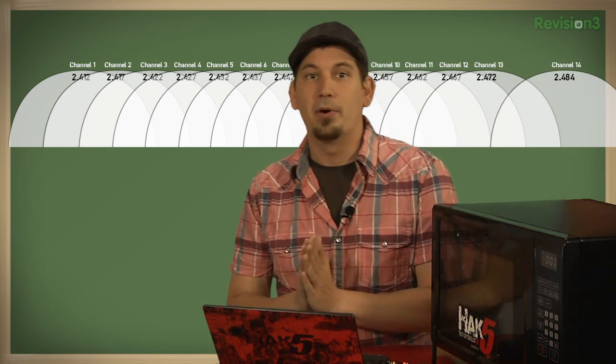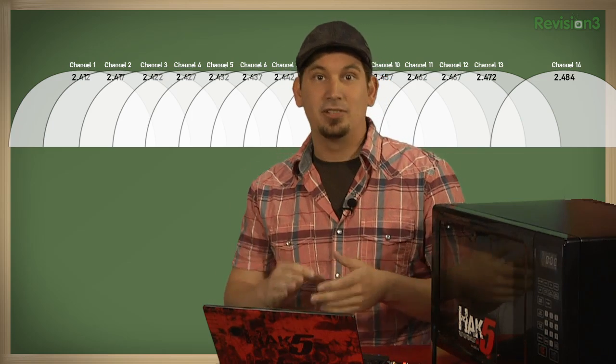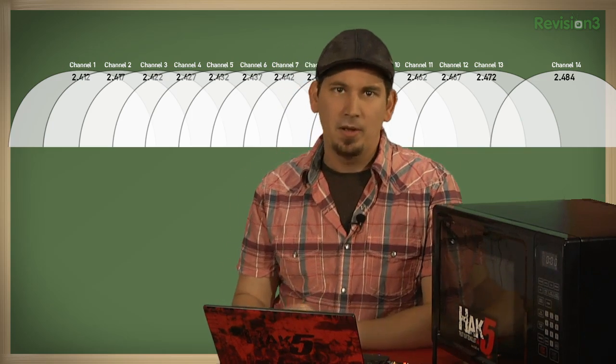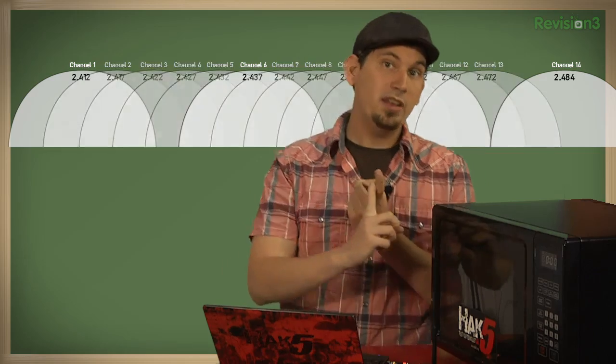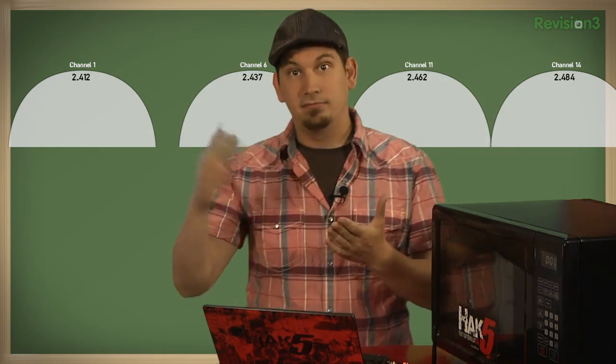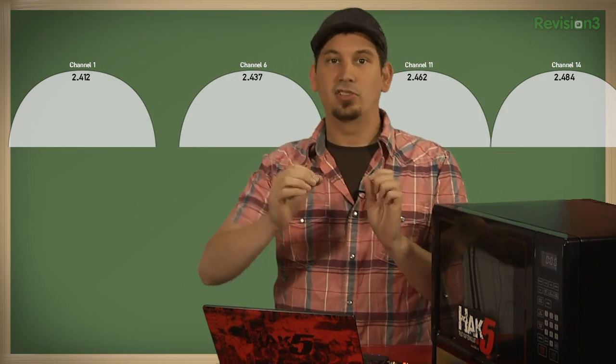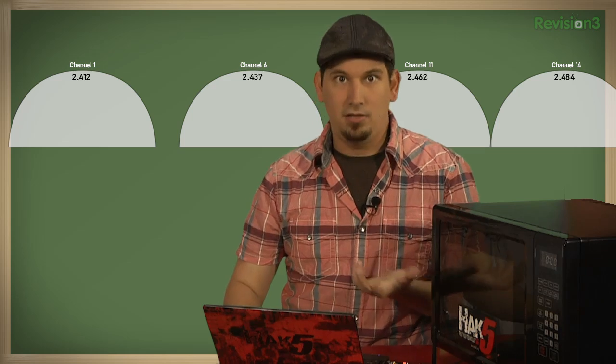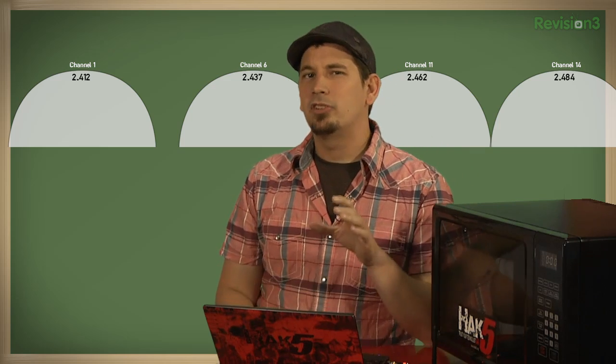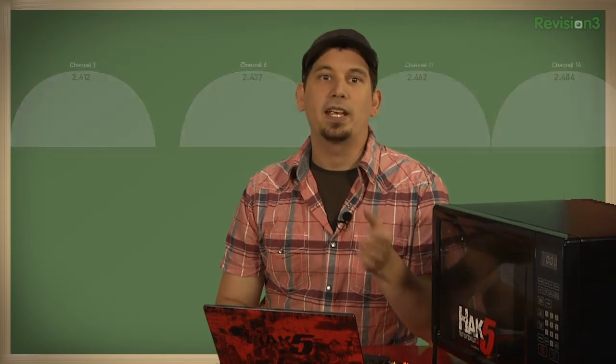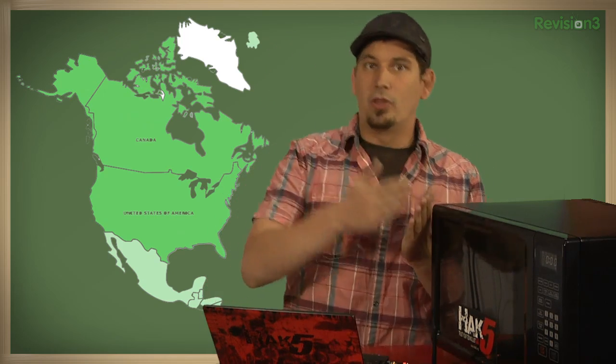As you can see, there's quite a bit of overlap, so the general recommendation is to use channels 1, 6, 11, and 14 as they're discrete — that is to say, they don't overlap each other. Channel availability is regulated by country. Here in North America we're supposed to use channels 1 through 11, while the rest of the world gets channels 1 through 13, and Japan is special — they get all 14 channels.